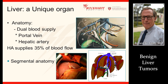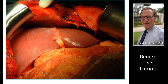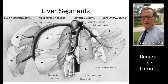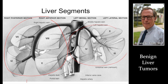The liver is a unique organ with a double blood supply. Here's what a healthy liver looks like after a liver transplant. That healthy liver, or diseased liver, is split into right and left lobes — this is the right lobe, left lobe — with segments.